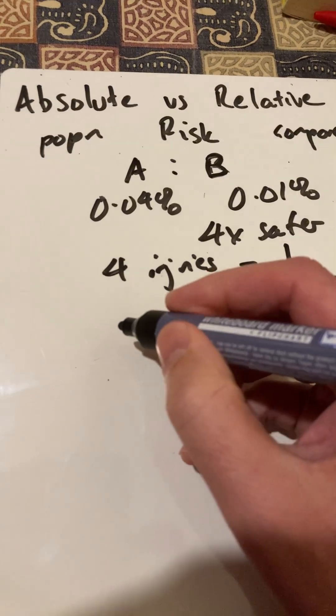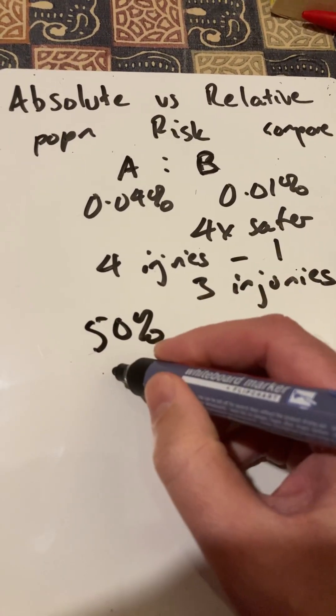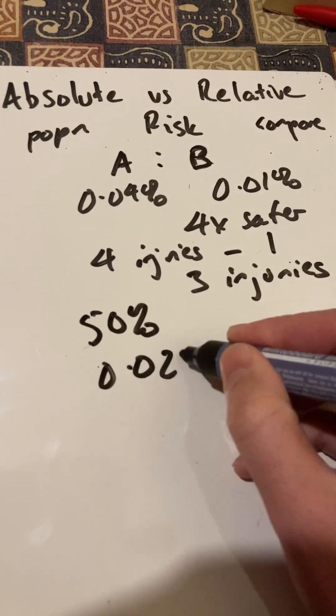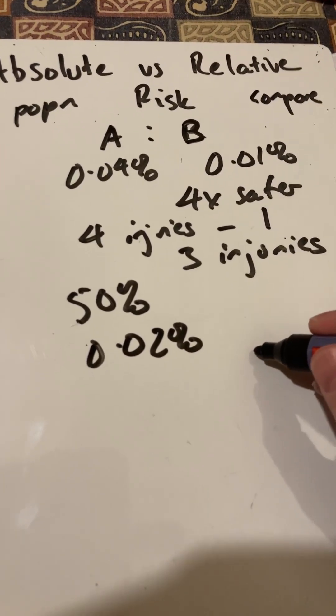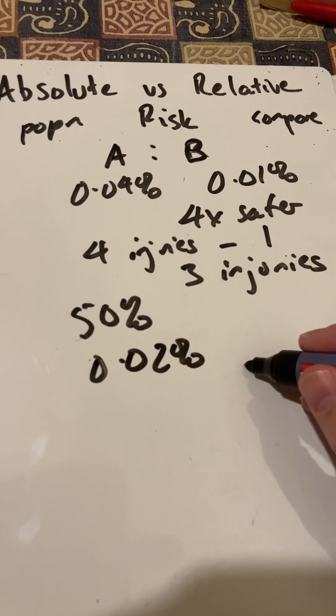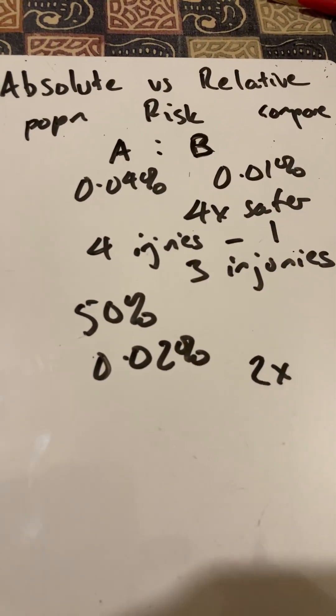A could have an intervention to improve its safety by 50%, so halving that, it would have 0.02%, in which case it's now only double the risk, so B is comparatively two times safer.